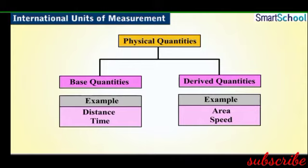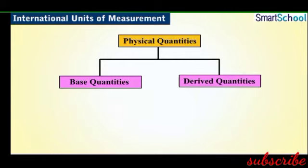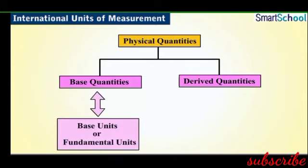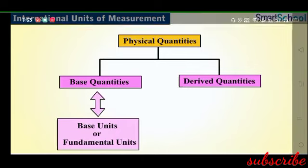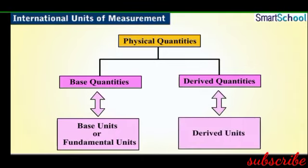Similarly, speed is a derived quantity as its measurement depends on distance and time. The units of fundamental or base quantities are called base units or fundamental units. The units of derived quantities are expressed as a combination of base units, and such units are called derived units.